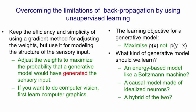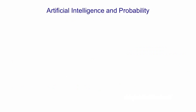Or finally, we might learn some kind of hybrid of the two, and that's where we'll end up. So before I go into causal belief nets made of neurons, I want to give a little bit of background about artificial intelligence and probability.